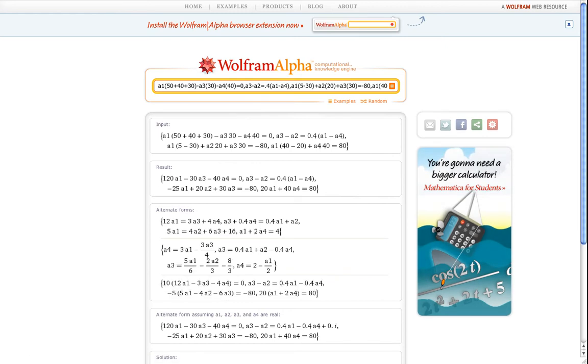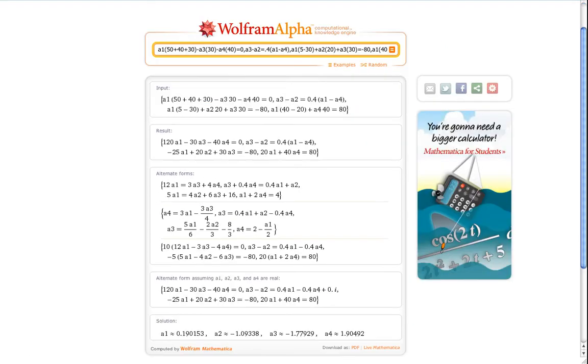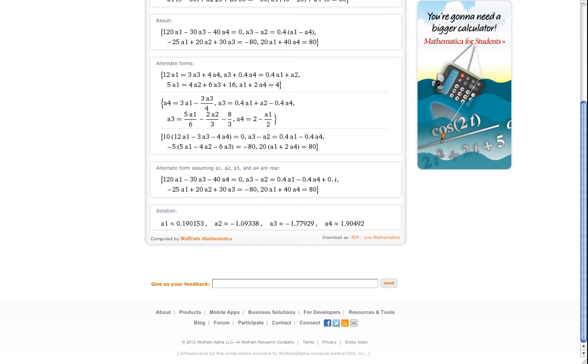Okay, it gives us several different ways of writing it out, and then it gives us a solution. And the solution is that I1 is 0.190.